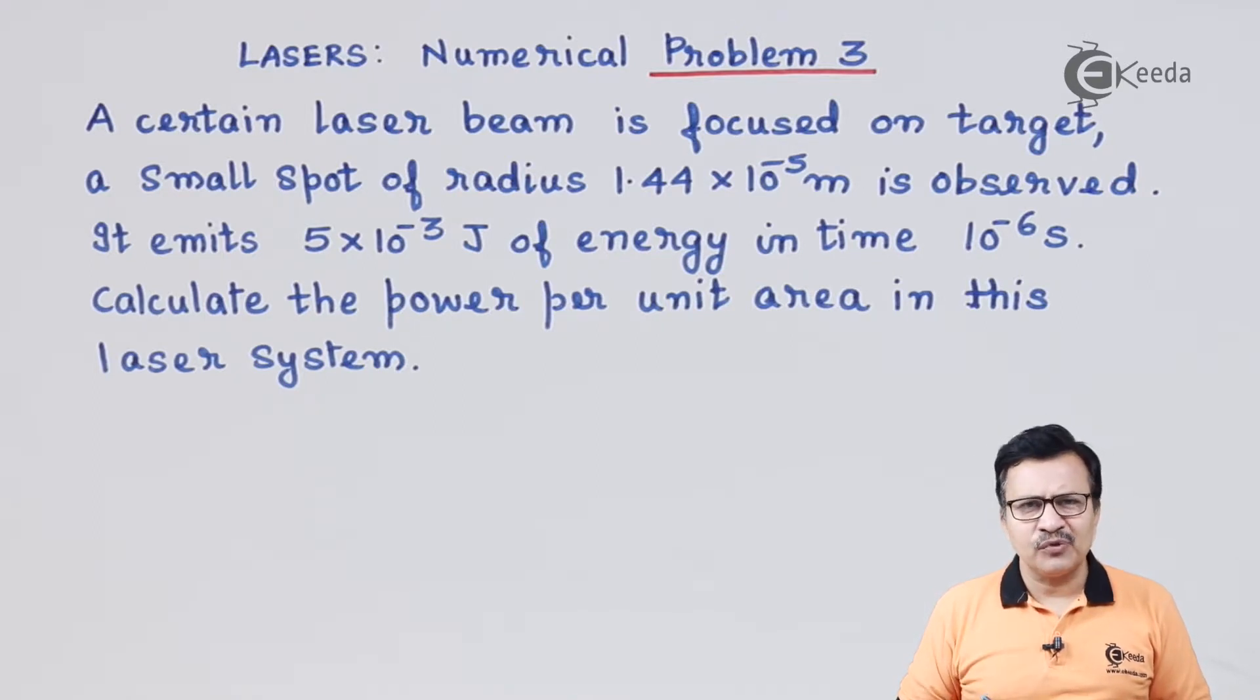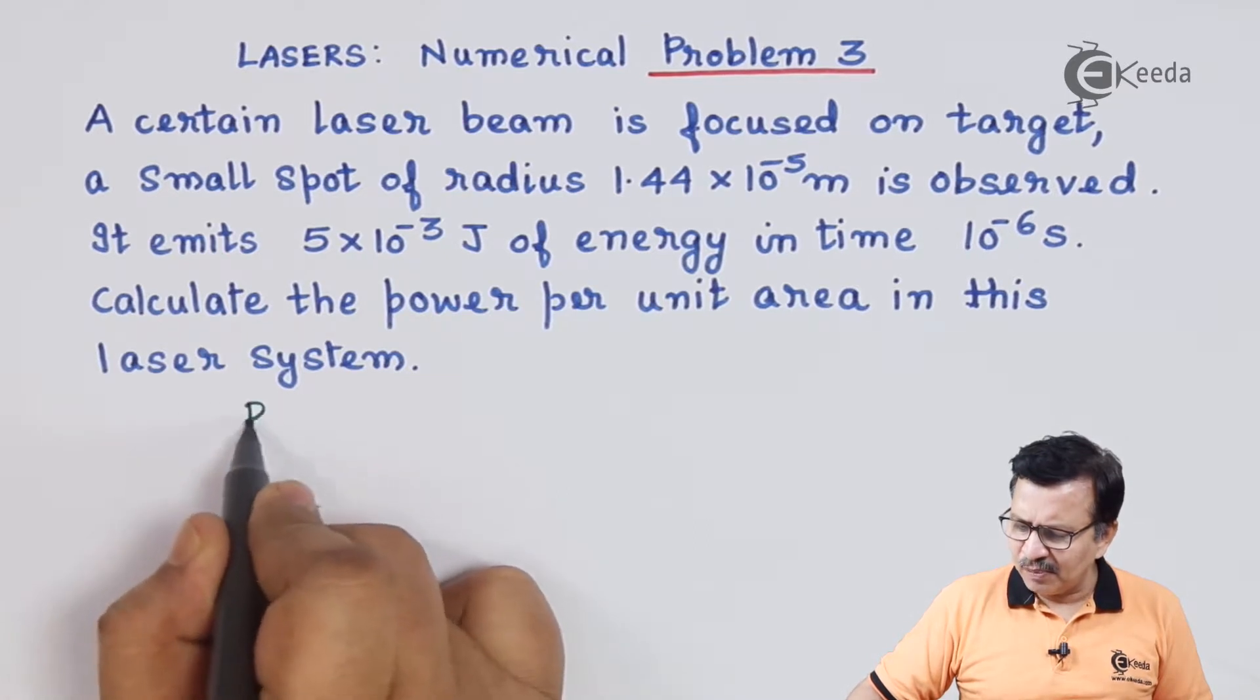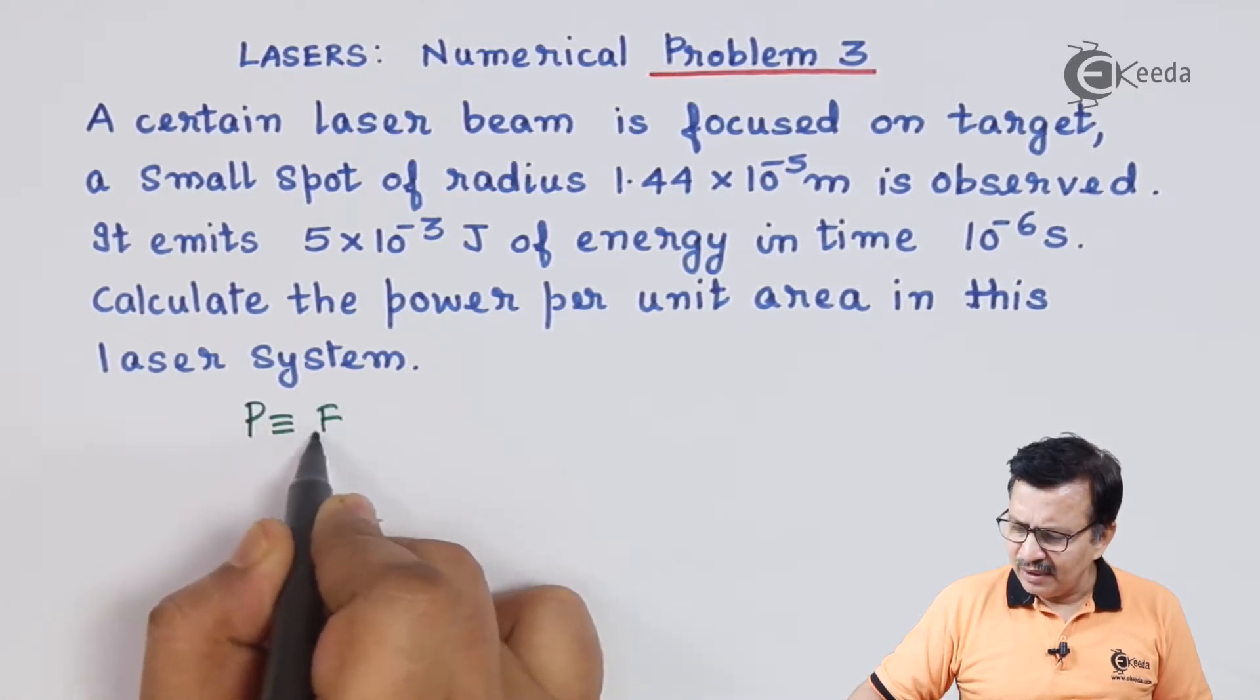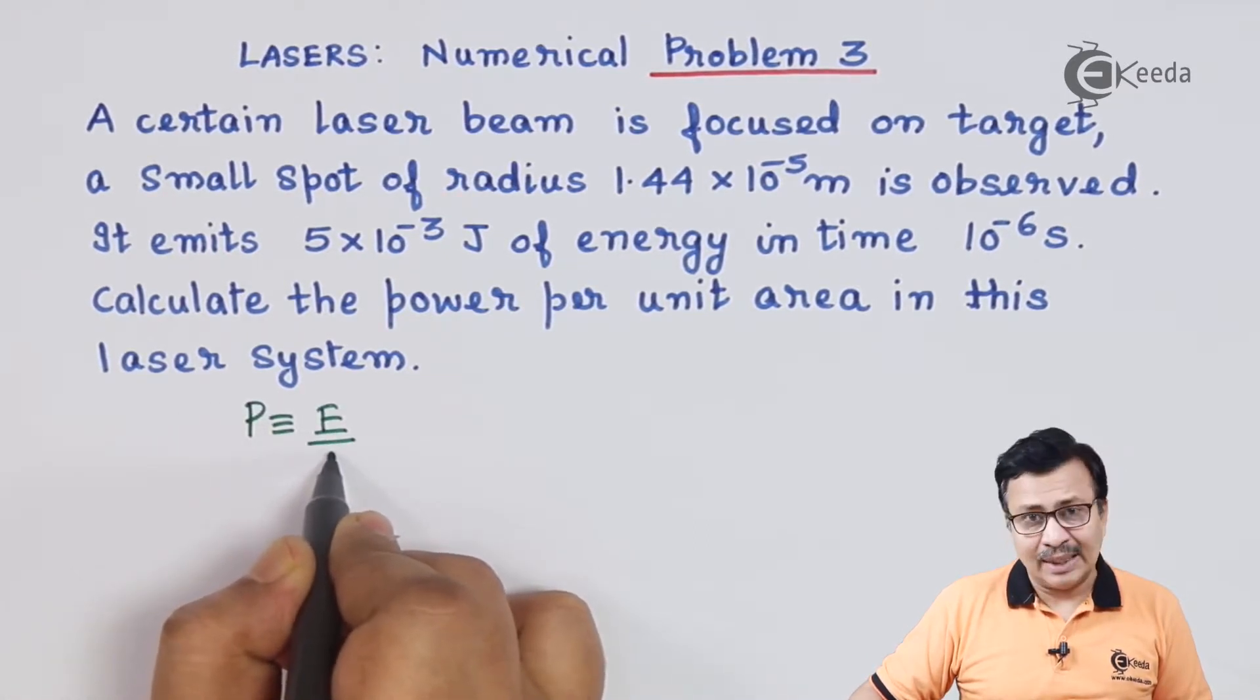The first step is to calculate the power. Power, as you know, is nothing but the energy that it liberates per unit time. So the expression for power is E divided by t.